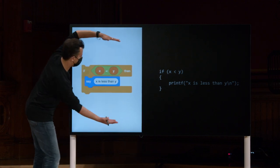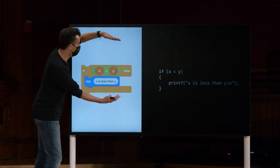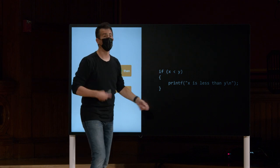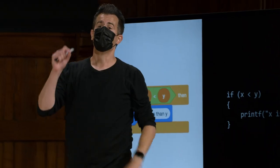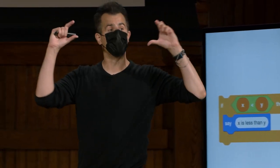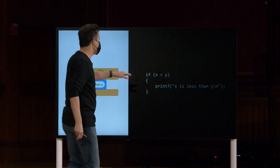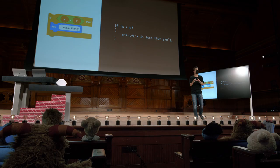Observe que, assim como a peça amarela do quebra-cabeça em Scratch está meio que abraçando a peça roxa do quebra-cabeça, esse é efetivamente o papel que essas chaves estão desempenhando. Eles estão meio que encapsulando todo o código do interior. Os parênteses representam a expressão booleana que precisa ser perguntada e respondida para decidir se deve ou não fazer essa coisa.